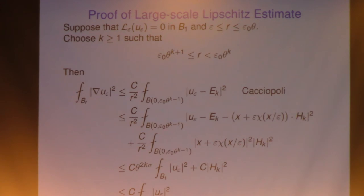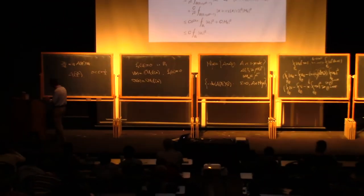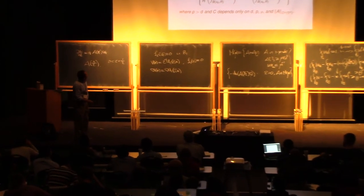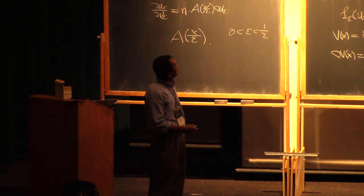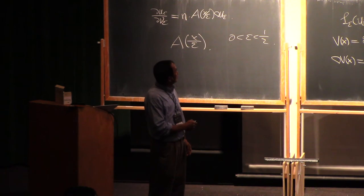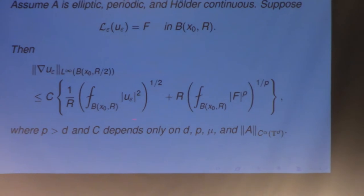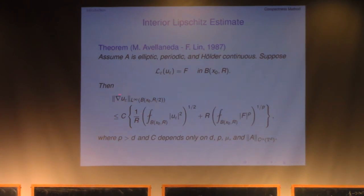You can translate and dilate the ball — it doesn't have to be centered at the origin or have radius 1. Suppose you have a solution in an arbitrary ball, assuming the coefficient is elliptic, periodic, and continuous. Then the L-infinity norm on the ball of half the radius of the gradient of the solution is bounded uniformly by the L2 average, rescaled by r because you have a gradient. That is the interior estimate.